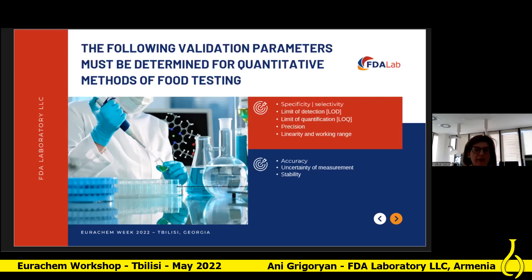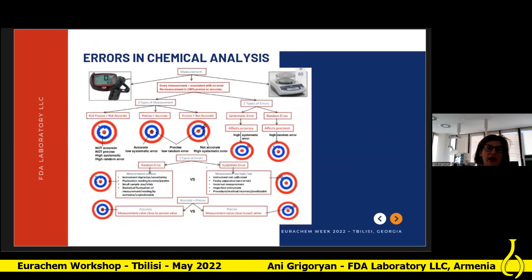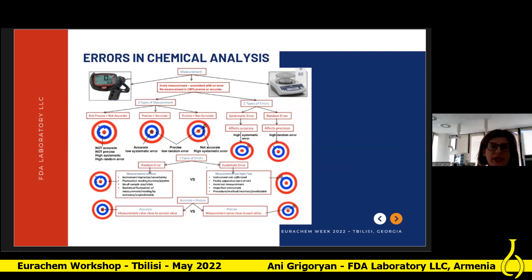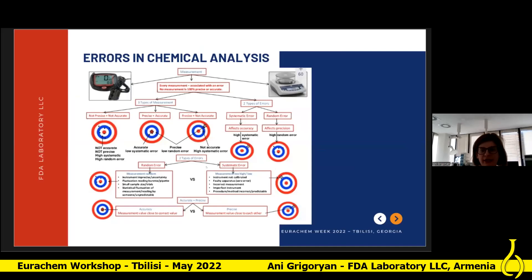During this whole process, we make some types of errors. It is impossible to perform a chemical analysis that is error-free or without uncertainty. Every measurement is associated with an error — no measurement is 100% precise and accurate. Our goals are to minimize errors and to calculate the size of these errors. Analytical measurement errors are divided into two categories: systematic or determinate errors, and random or indeterminate errors.